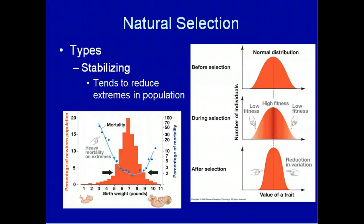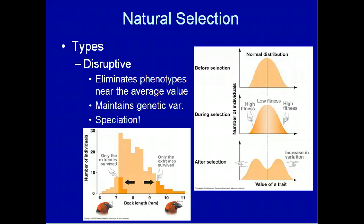The last type of natural selection I want to talk about is disruptive selection. Disruptive selection eliminates phenotypes near the average value, maintains genetic variation, and is particularly important because it is often the mechanism that results in speciation — the occurrence of new species.